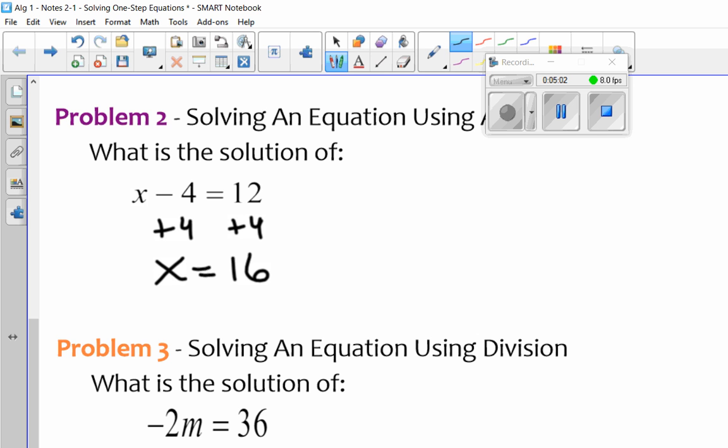Remember what this says. This is a multiplication problem. It says negative 2 times m whenever we squish a number next to a variable that says multiplication. So undo multiplication is to divide both sides by whatever is in front of the variable. Make sure you take the negative number with it. A lot of kids make mistakes. They just divide it by 2. You have to bring the sign with it.